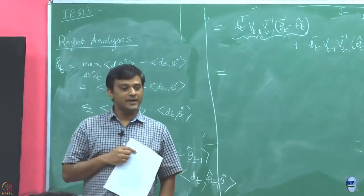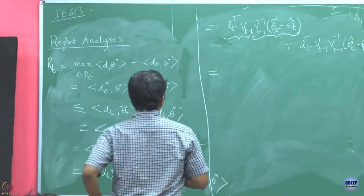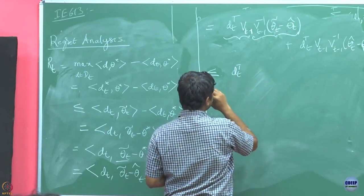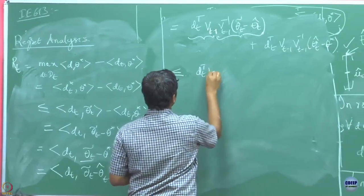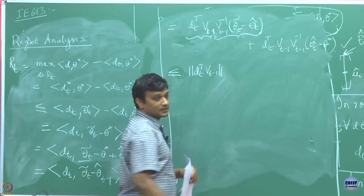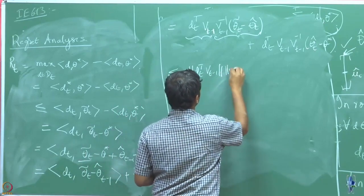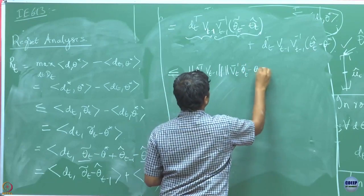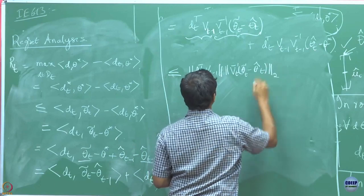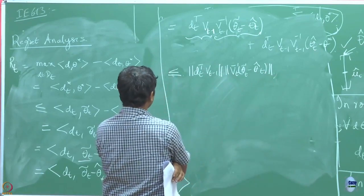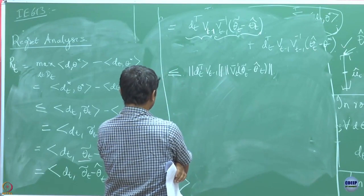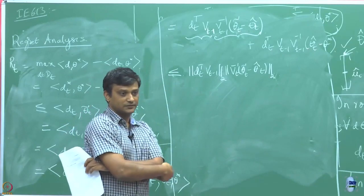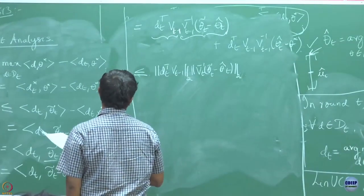Now I am going to apply Cauchy-Schwarz. Applying Cauchy-Schwarz, this gives us ||d_t||_{V_{t−1}} times ||θ̃_t − θ̂_{t−1}||_{V_{t−1}^{−1}}, and similarly for the other term. The norm here is the L2-weighted norm. This is one vector, this is another vector, and these are the norms of those vectors.